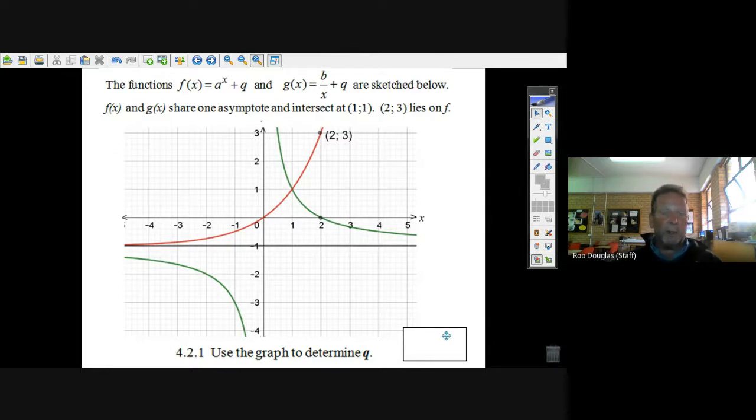Now, this is the one that's a bit more challenging. It's not just graph the functions. In this one, you're given two functions. You're told one is called function f, and the other one's called function g. Now, one is in the form a to the x plus q, and the other one's in the form of b over x plus q.